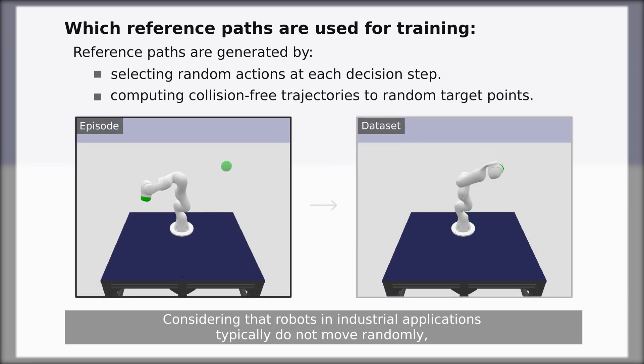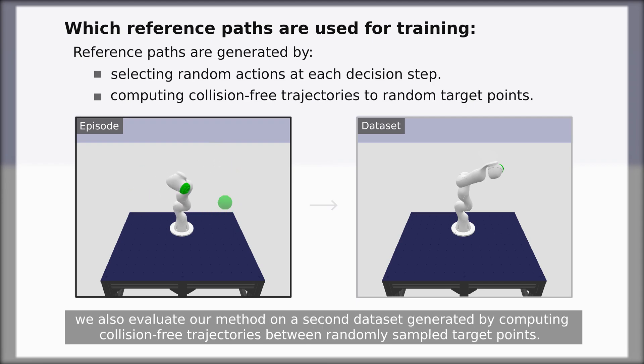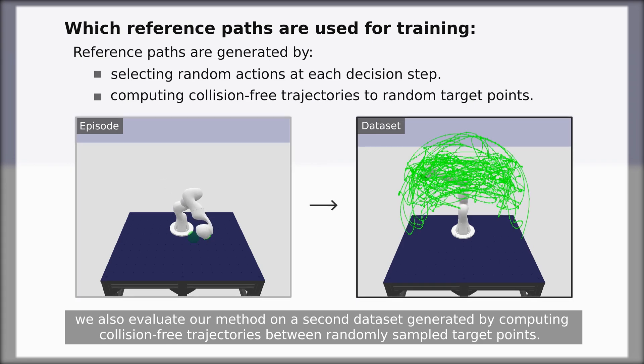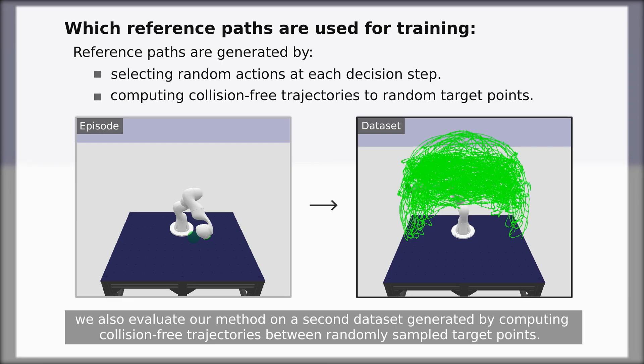Considering that robots in industrial applications typically do not move randomly, we also evaluated our method on a second dataset generated by computing collision-free trajectories between randomly sampled target points.